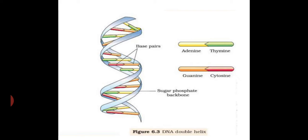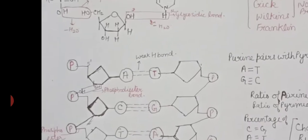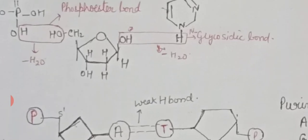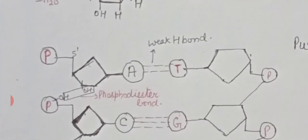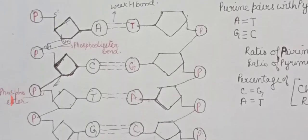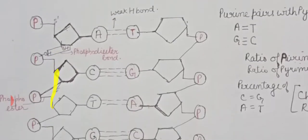In DNA, the basic unit is the nucleotide. Each nucleotide has three components: a deoxyribose sugar joined to a nitrogenous base via a glycosidic bond, and a phosphate moiety attached by a phosphorous bond — together forming a complete nucleotide. Many nucleotides are joined together by phosphodiester bonds to form a complete polynucleotide chain.